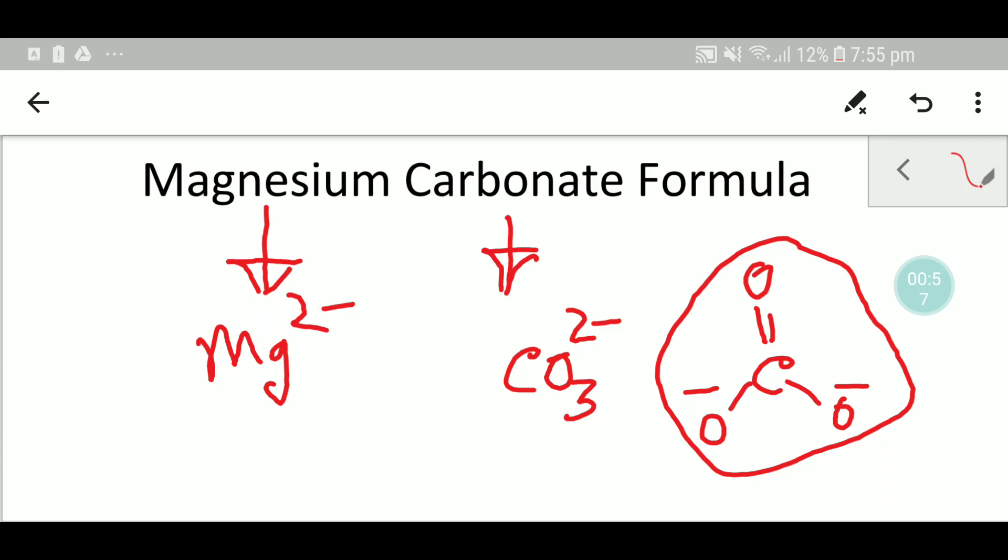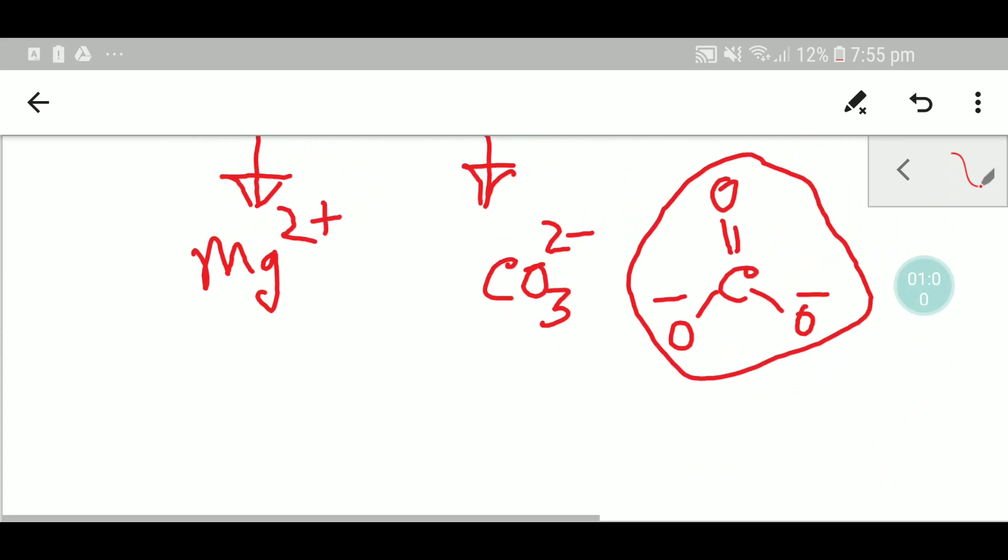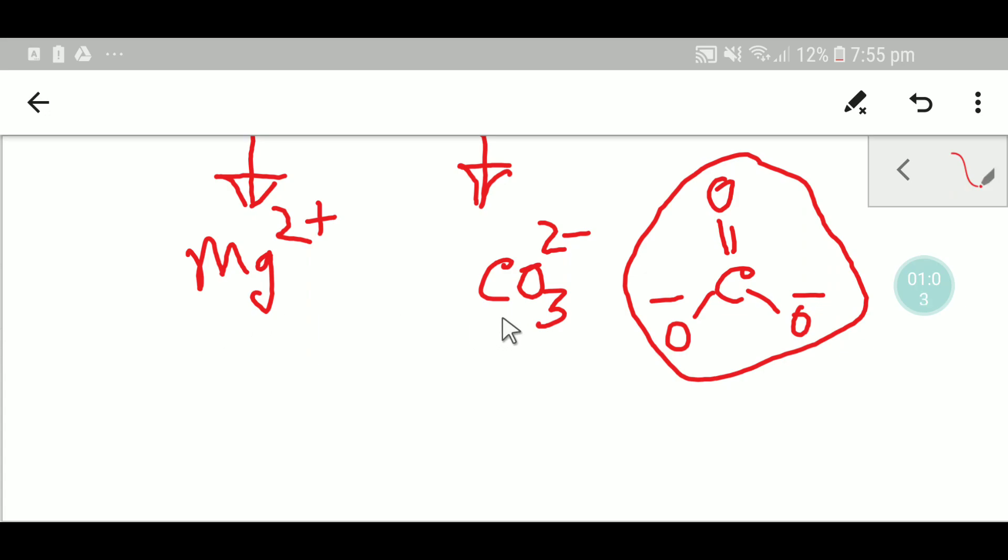If magnesium releases two electrons, then we will get a two plus ion. This is magnesium ion, this is carbonate ion.